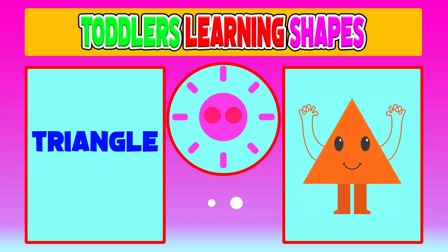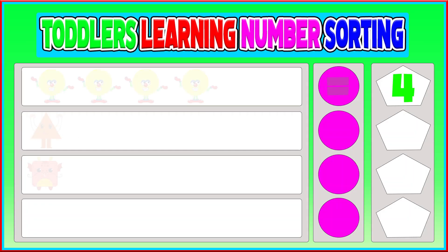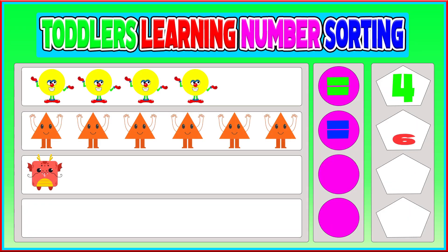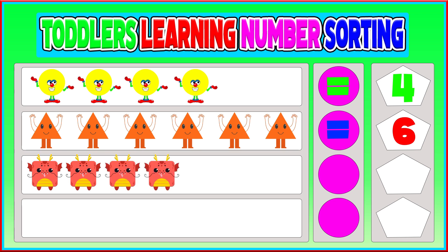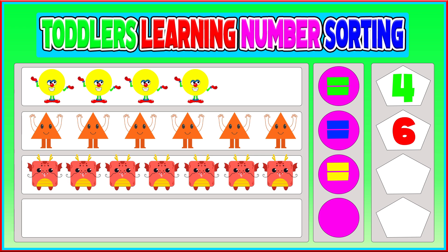Triangle: 1, 2, 3, 4, 5, 6, 7 is equal to 7.